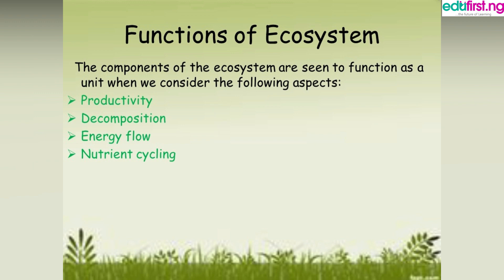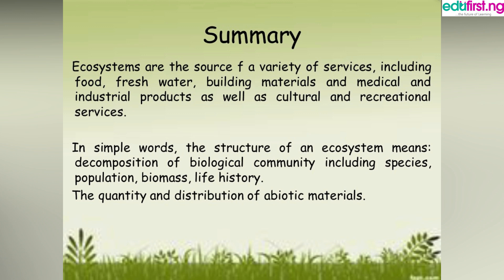Energy flow is one-way, moving from producer to consumer and ending in decomposition. Every organism depends on another for food and supply of energy. In the energy pyramid, it starts with the producers — plants that manufacture their own food using sunlight. Animals are consumers; they depend on these plants, which are autotrophs, to get energy. The decomposers also depend on these consumers to get their own energy.